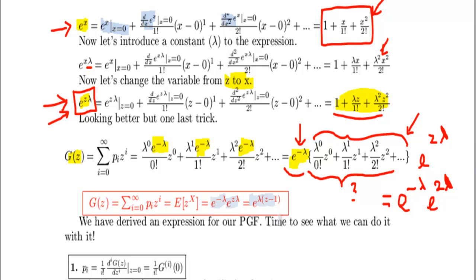So mission accomplished. It was quite painful, but finally we got there. We derived the probability generating function of Poisson distribution.